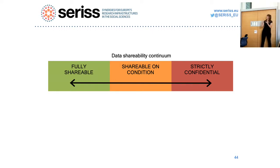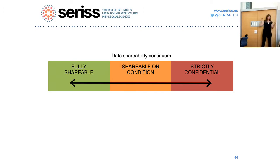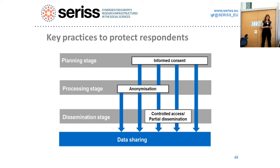This brings us to the idea of layers of protection. First there is informed consent — sometimes it's enough just to have consent to make data available, even if it contains personal or sensitive information. Sometimes you need both consent and anonymization, and sometimes consent, anonymization, and access control together.